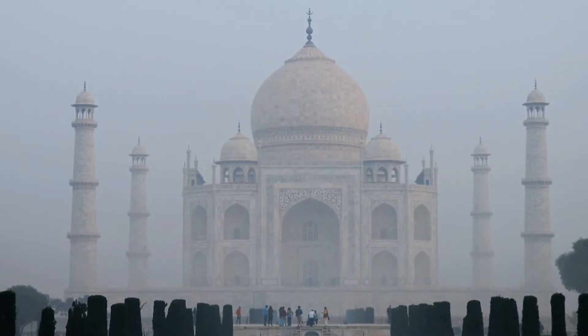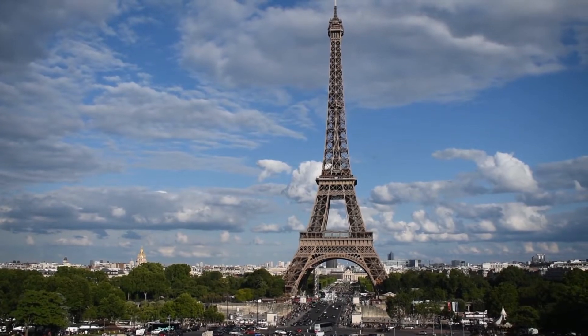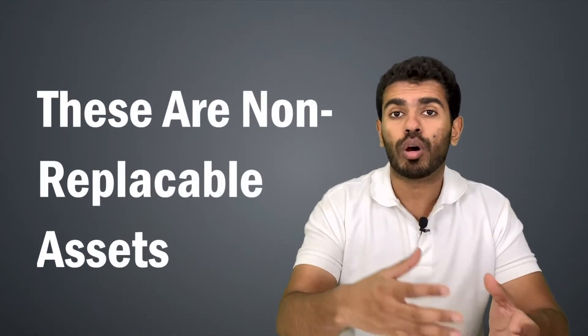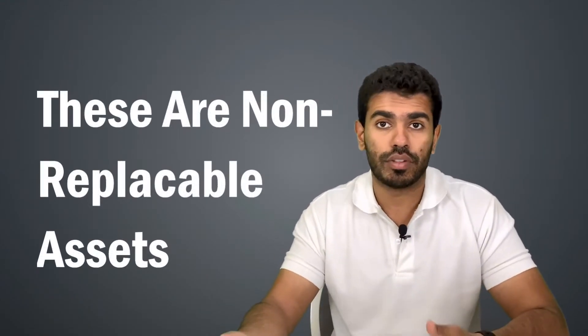Or you can have the Taj Mahal. Taj Mahal is unique. You cannot have two Taj Mahals. The original Taj Mahal is only one. The Eiffel Tower, again, it's unique. So these are your form of non-replaceable assets which is a non-fungible asset but in the physical form.